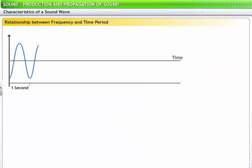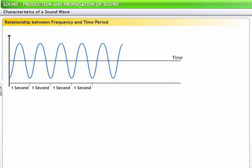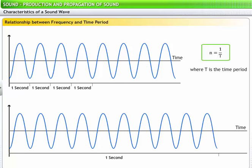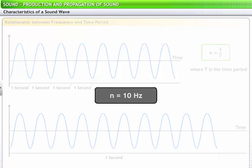Let's see how frequency relates to time period. The relationship between frequency and time period can be expressed as N is equal to 1 divided by T, where T is the time period. Thus, if the time period of a wave is 1 tenth of a second, then we get 10 waves in 1 second. The frequency of this wave is 10 hertz.